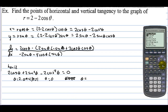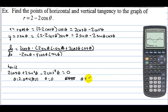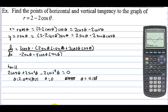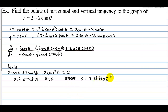Let's calculate the next zero. It looks like it's between 4 and 5, so we can set left bound at 4, right bound at 5, and guess 4.2. We get theta equals approximately 4.1879027, so 4.188.